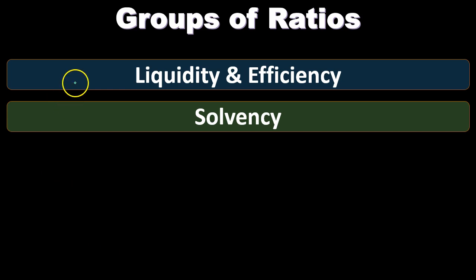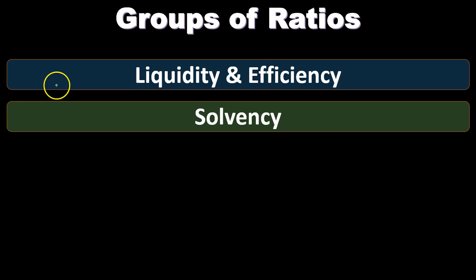Notice that one way to solve a liquidity problem, if you're having issues paying short-term obligations, is to move those obligations into the long-term — for example, taking out more long-term loans rather than short-term loans. That'll help in the short-term, but it will not be good for the long-term, and we'll see that problem within the solvency calculations.